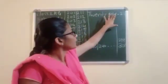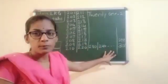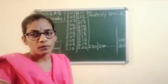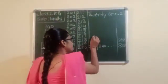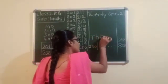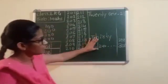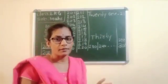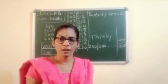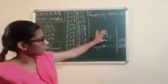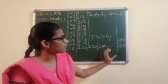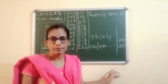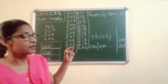You write twenty, twenty up to 29 — and then write 1, 2, 3, 4, 5, 6, 7, 8, 9 after it. Up to 9 you write, and the last one — only the last spelling changes. That is 30. 30 spelling: D, H, I, R, T, Y — thirty. Only the last spelling changes. Next you continue: 31, 32, 33, 34, 35. Write thirty, thirty up to 39, and 1, 2, 3, 4, 5, 6, 7, 8, 9. Only the last spelling changes.